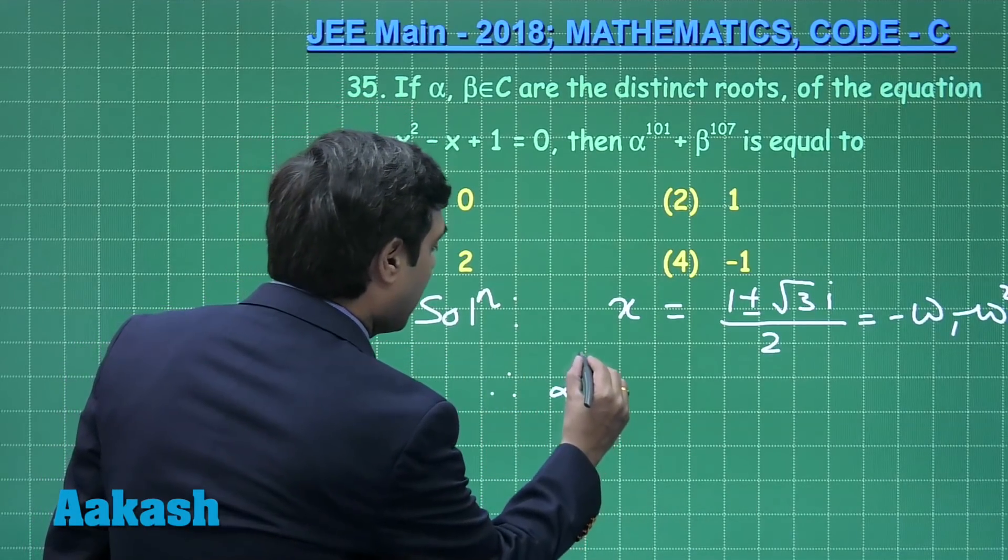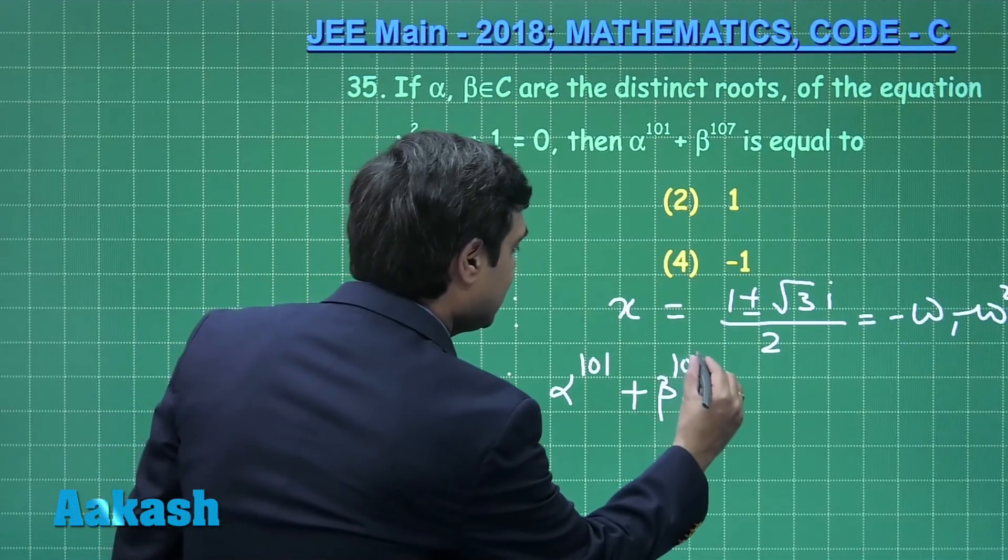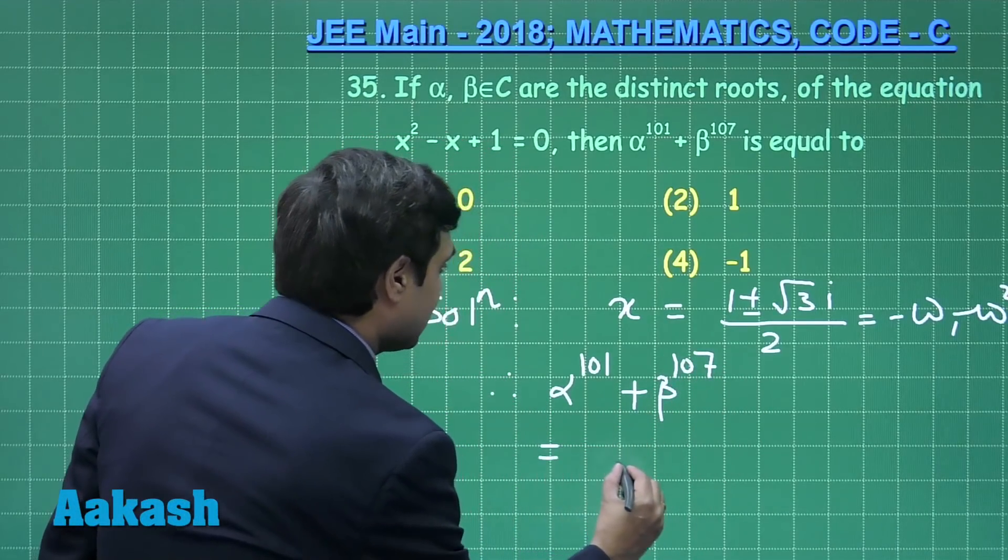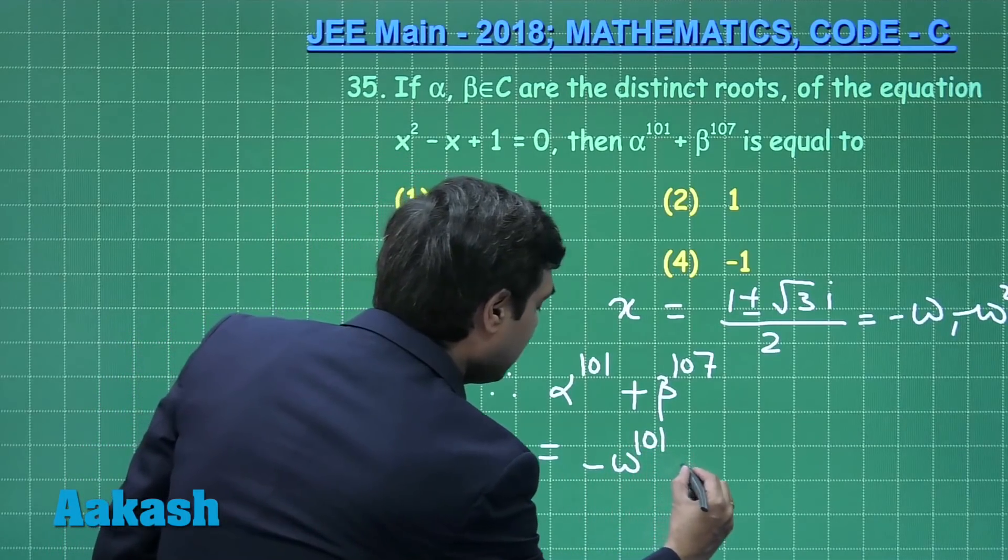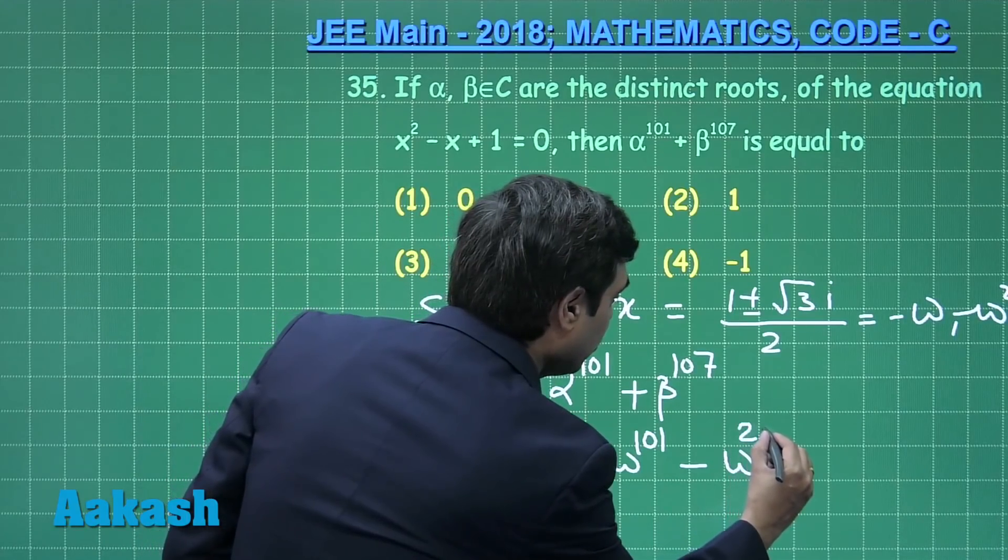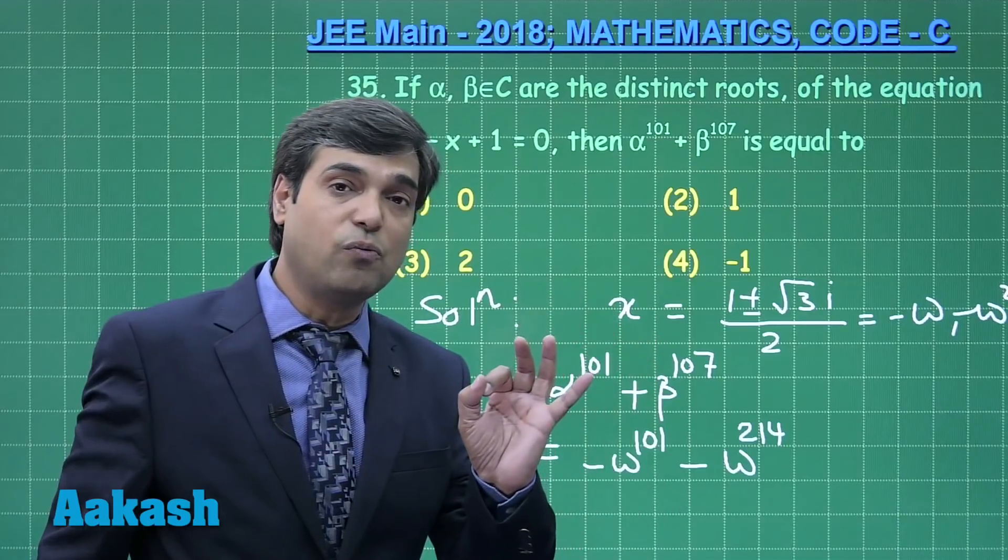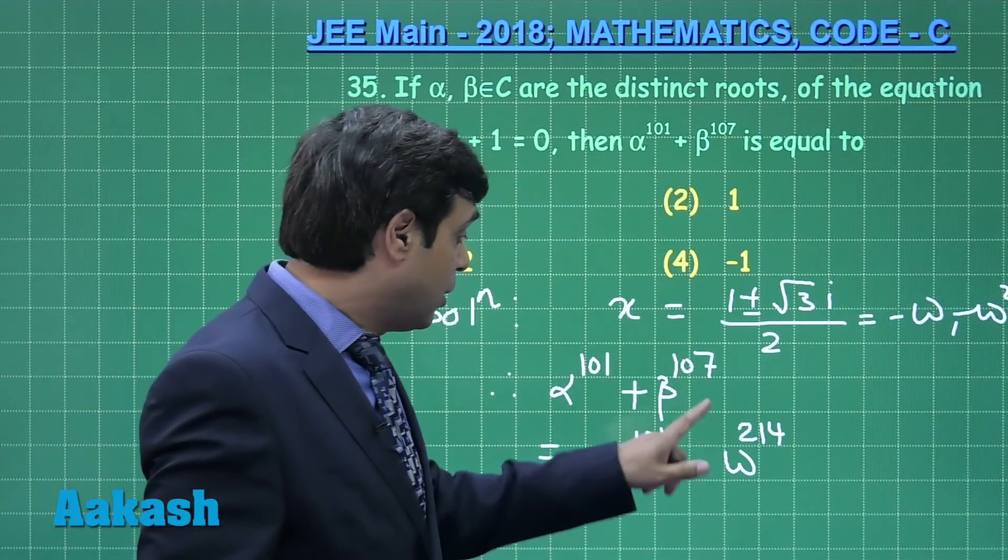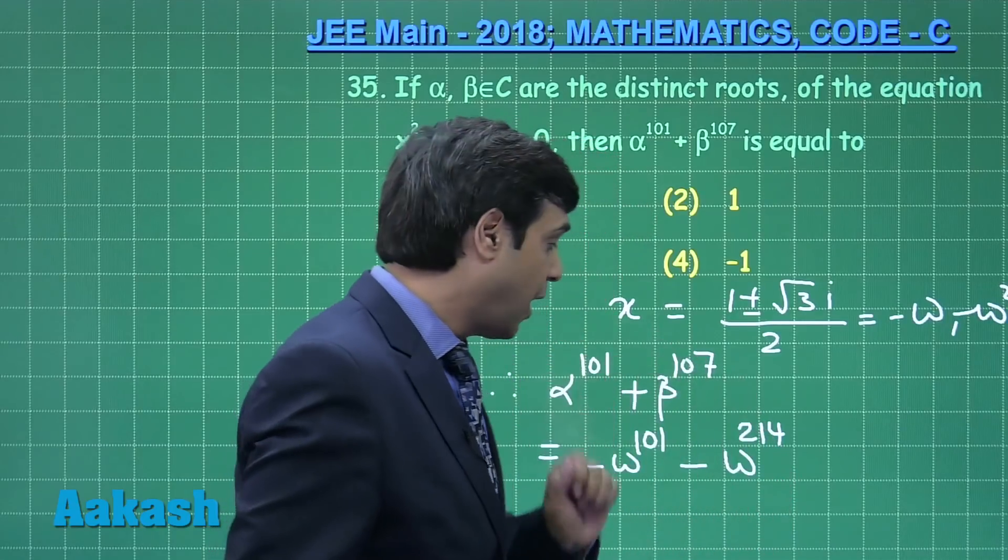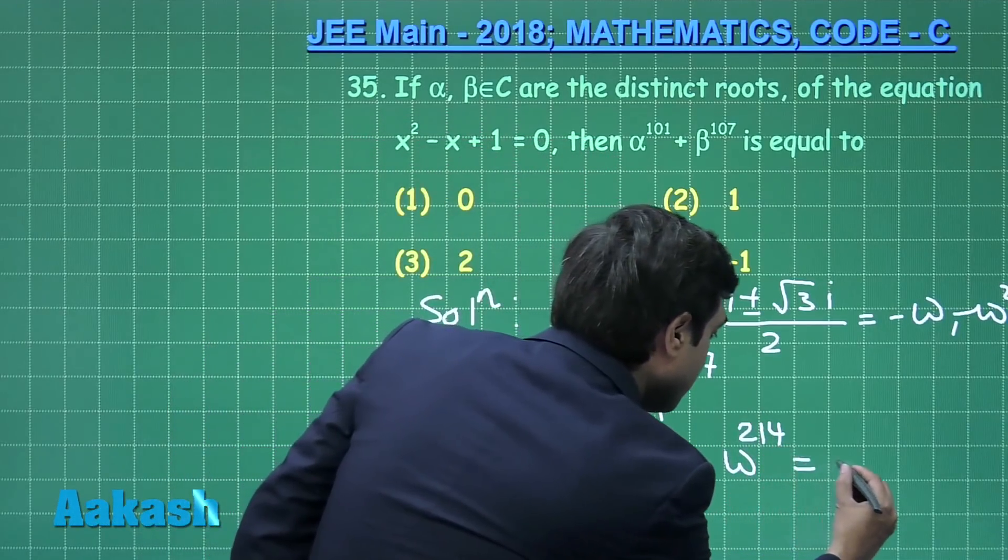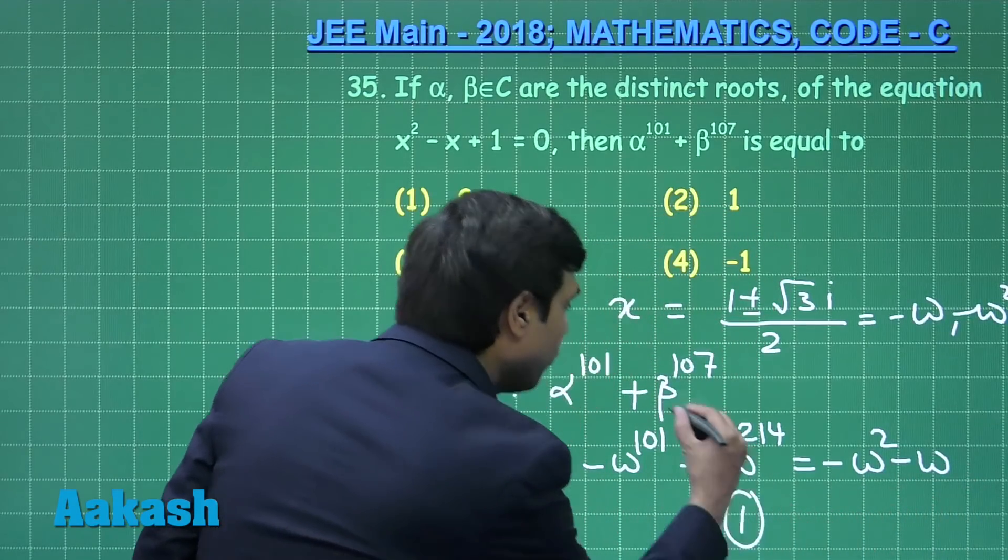Therefore, alpha to the power 101 plus beta to the power 107 equals minus omega to the power 101 minus omega to the power 214. Omega to the power 101, that is omega square. Omega to the power 214, that is omega.